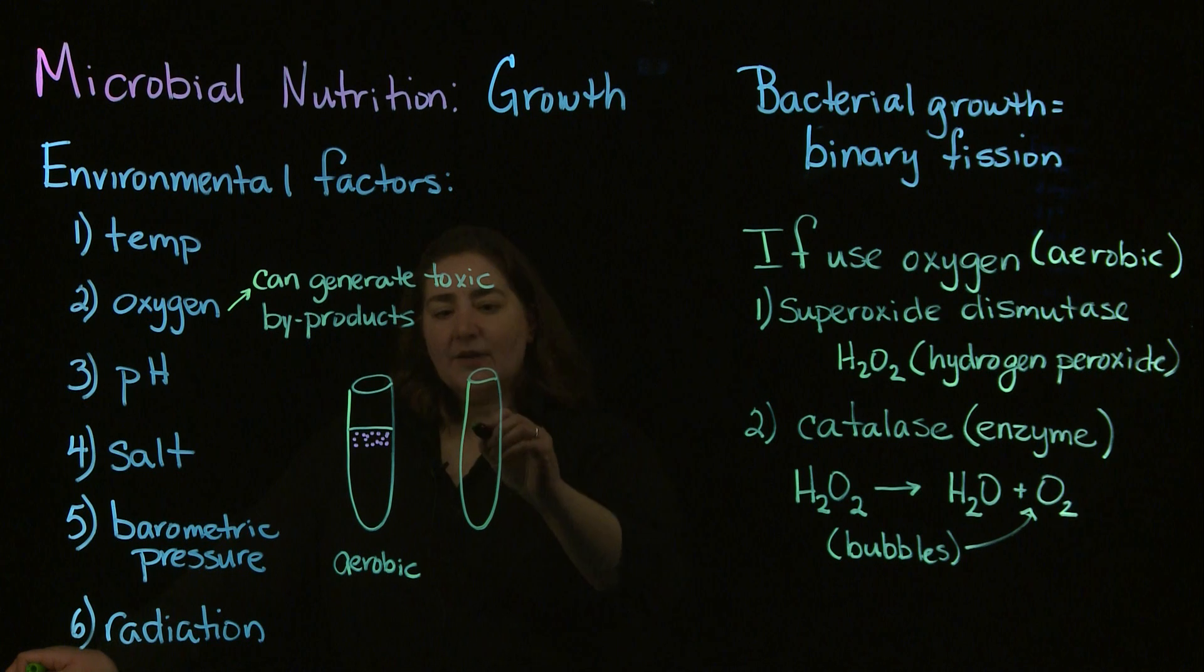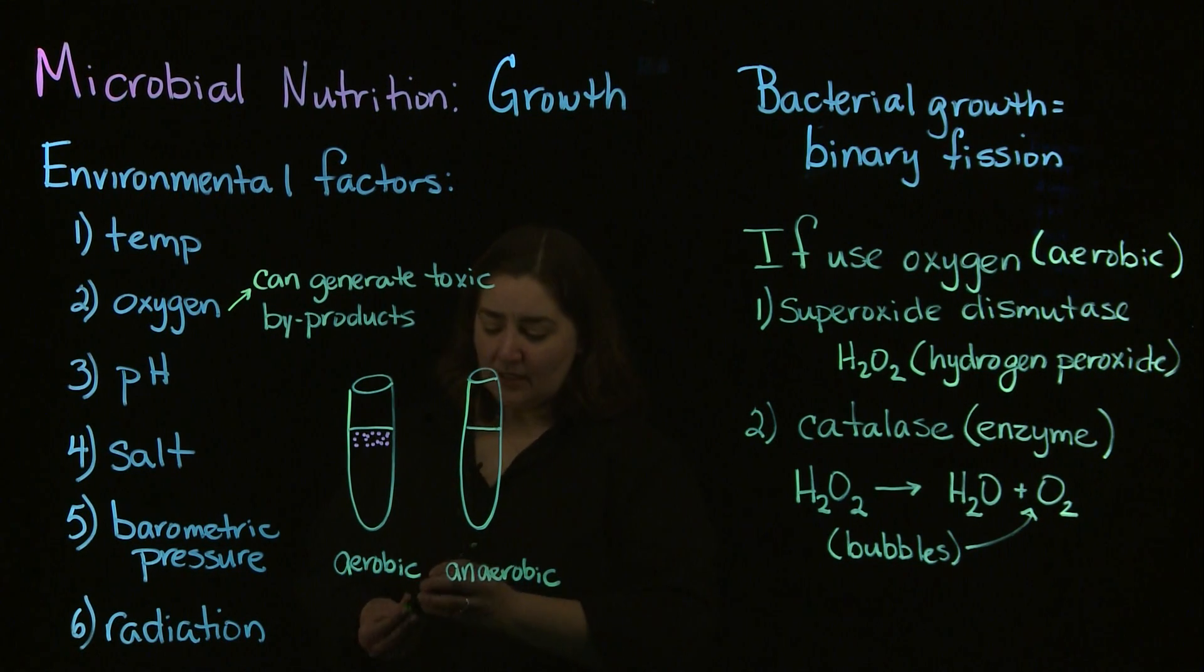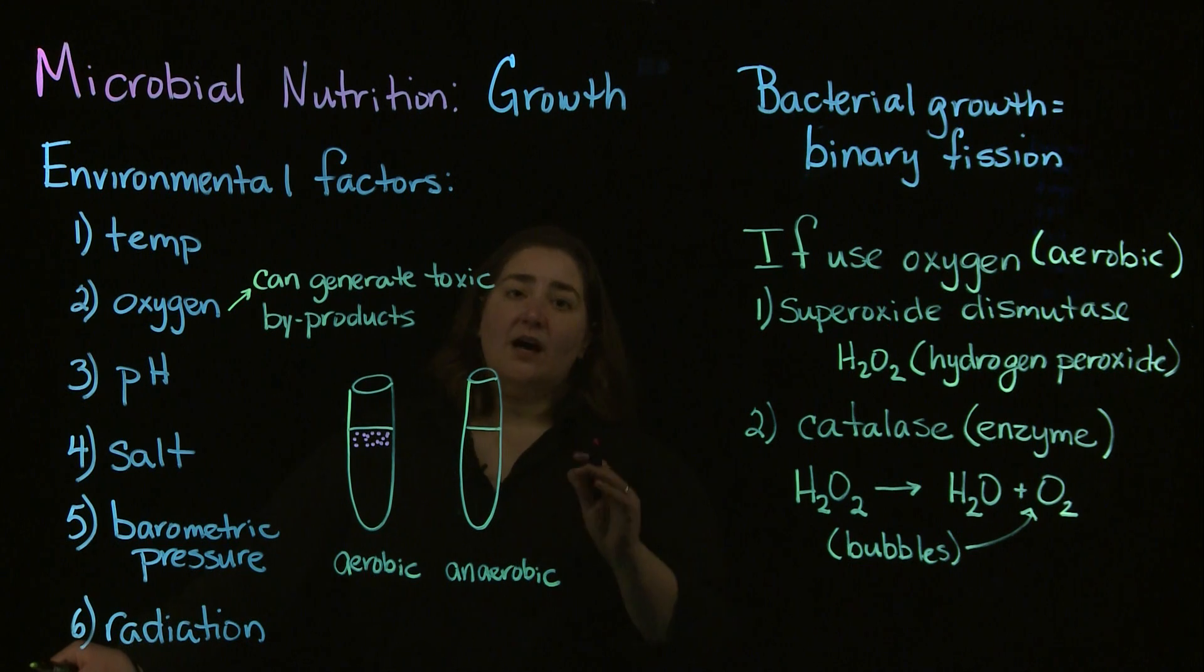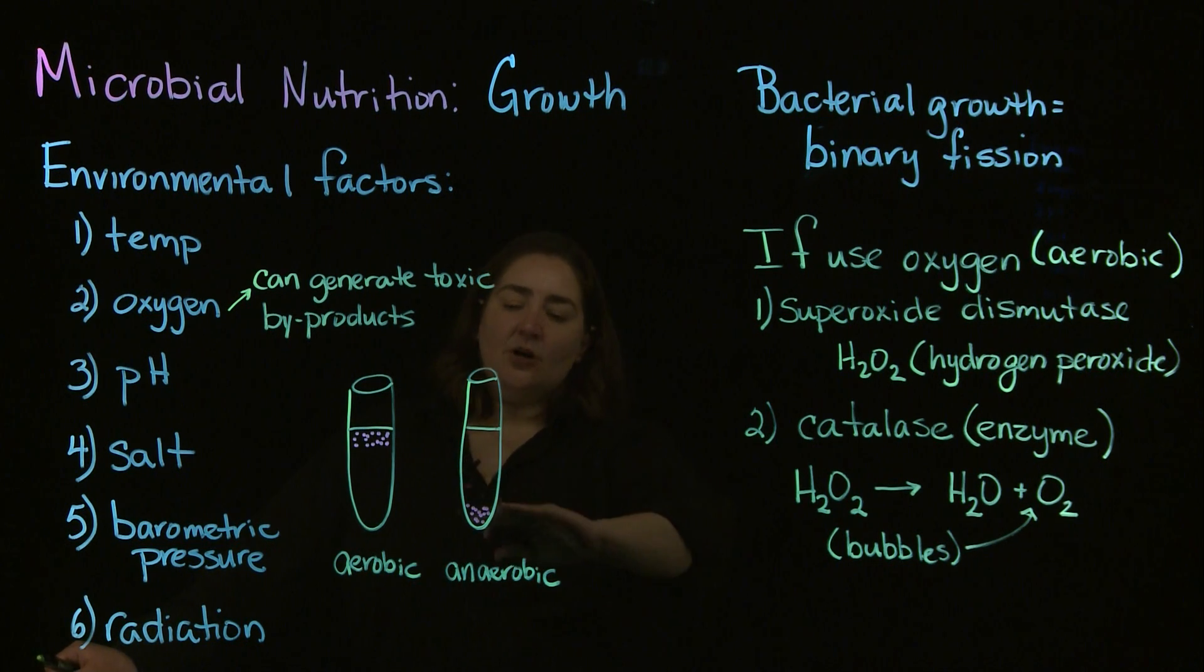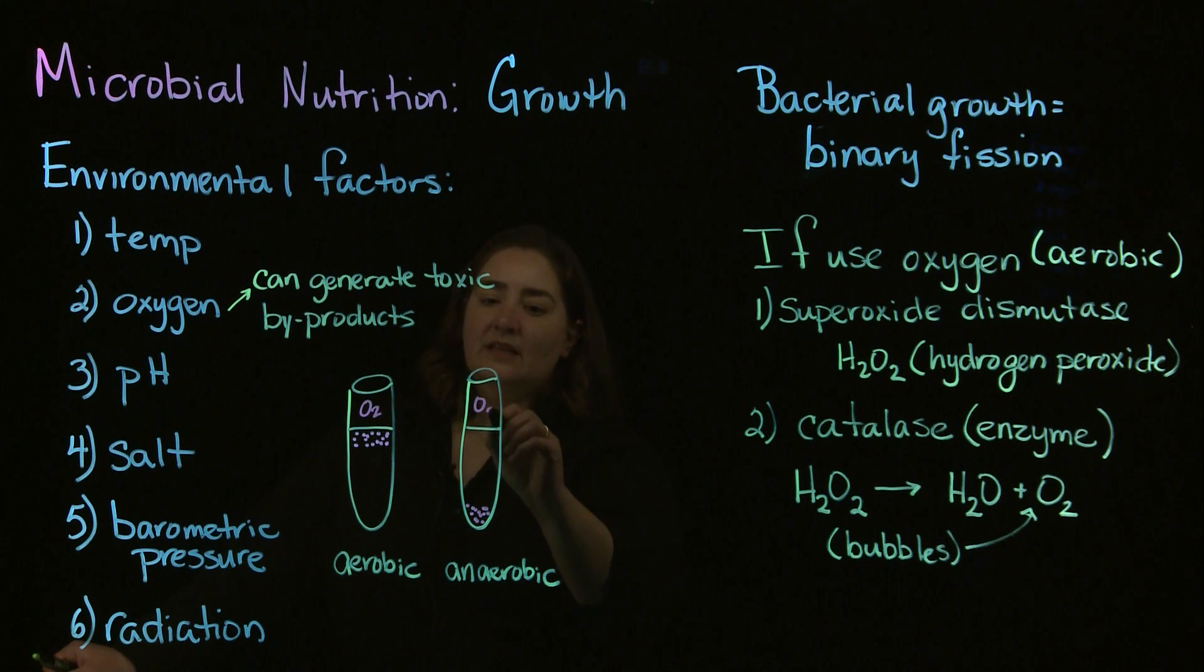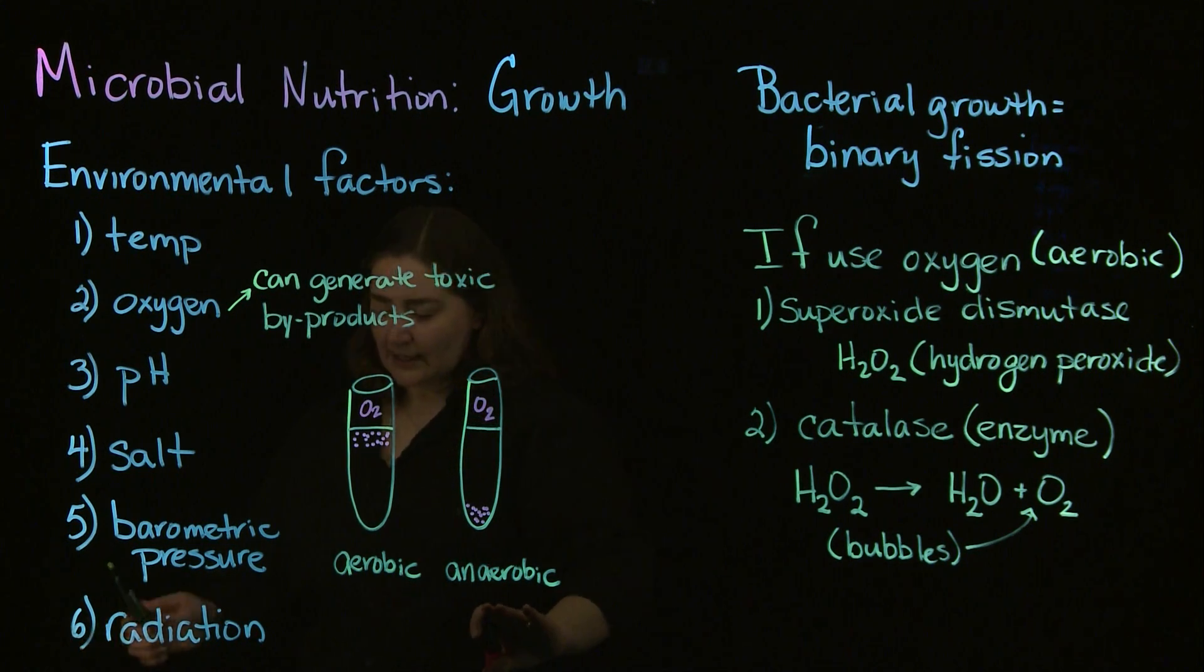We can also have bacteria that are anaerobic. If they're anaerobic, oxygen is toxic for them. They don't possess the enzymes to break that down. So anaerobic bacteria grow as far away from the oxygen source as possible.